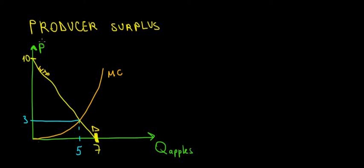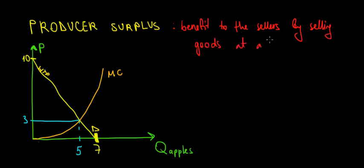Now let's work on the concept of producer surplus in this video, and we'll see the analogy, the similarity between this and the consumer surplus. So in simple words, what would be producer surplus? That is the benefit to the sellers, the producers, by selling goods at a price higher than the marginal cost of production.